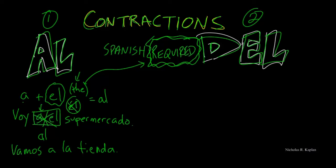Another one: a plus la. Wait, that's not el, so no, I don't have to do anything. It's only when I have a plus el we get al. Okay, so that's contraction number one.